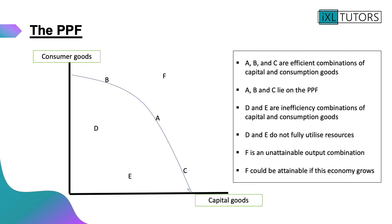The PPF is a diagram, and there's an example of one in front of you. That blue line is the PPF, and on the axes we've got capital goods and consumer goods. This economy can produce a combination of consumer goods and capital goods. We've got three points on the PPF — points A, B, and C — and as they are on the PPF, they all show efficient combinations of capital and consumer goods. If you're producing at points A, B, or C, you are fully utilizing all resources to produce as much as possible with your scarce resources.